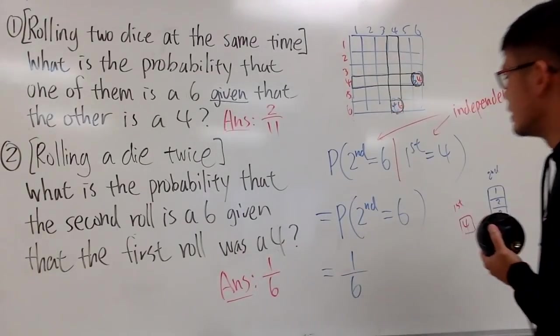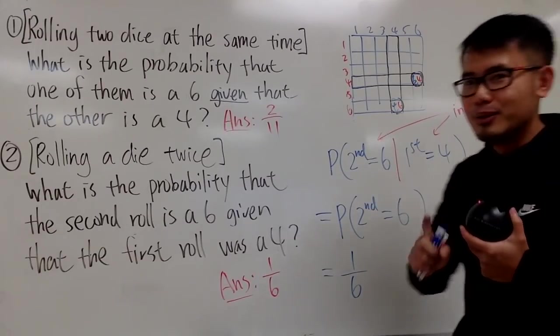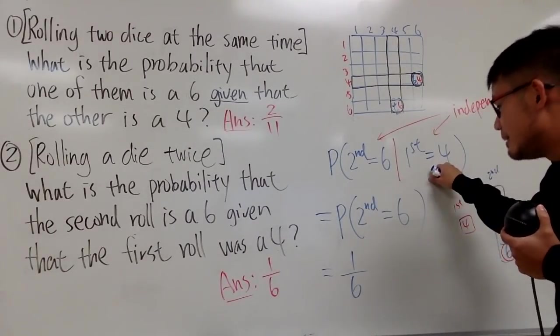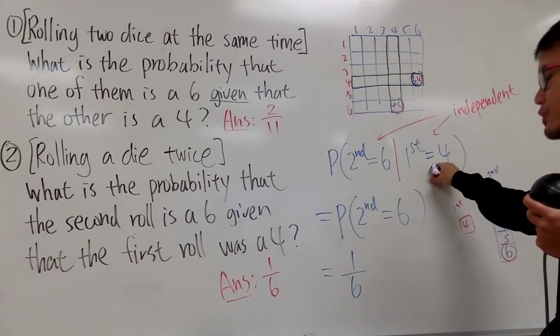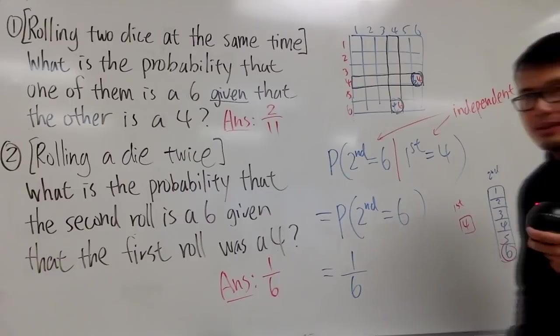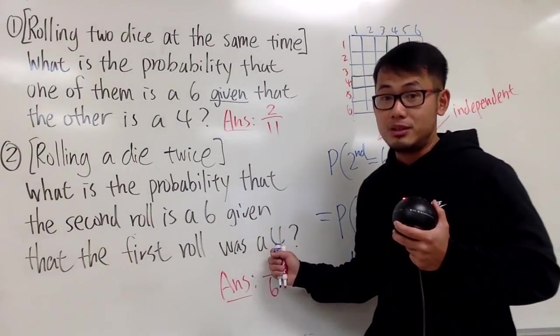So, the deal is, if these two are independent, I almost wanted to say linearly independent, but no. If these two are independent, you are just trying to get the probability of getting the second roll to be a 6. The first roll, you know, 100% already, it's a 4, because you know it.